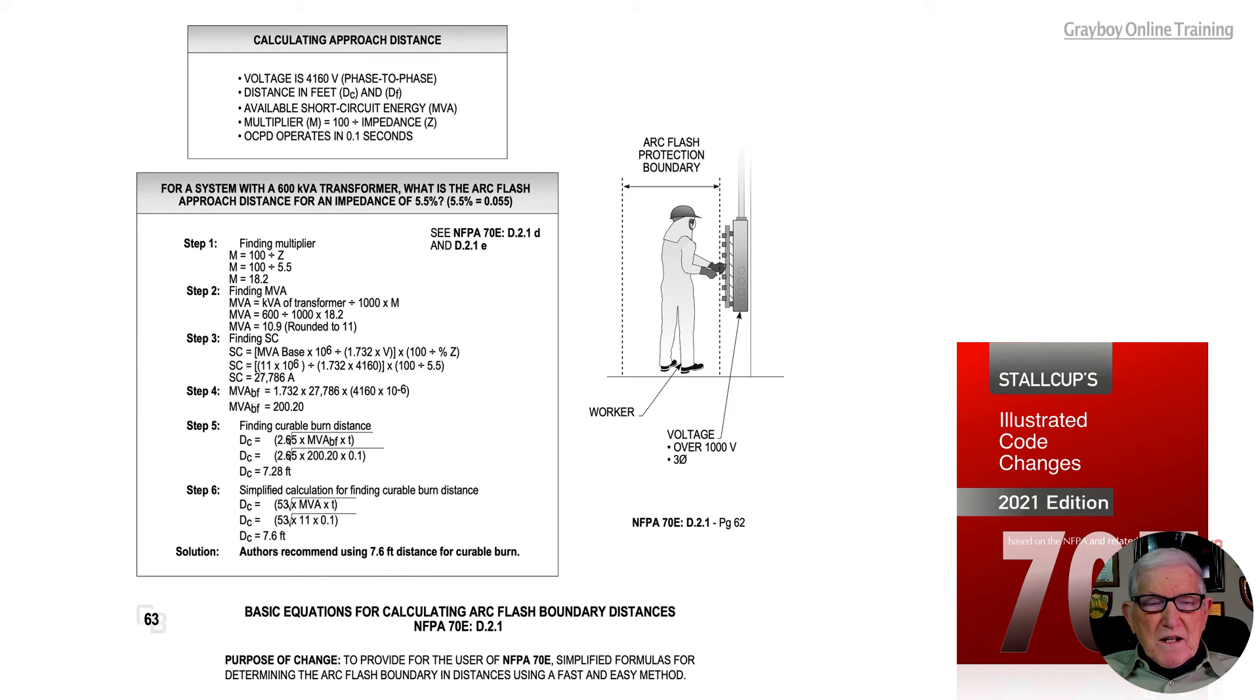This illustration deals with basic equations for calculating arc flash boundary distances in accordance with NFPA 70E Annex D.2.1. The purpose of the change was to provide simplified formulas for determining the arc flash boundary distances using a fast and easy method.